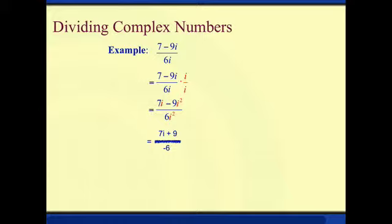However, the problem is the numerator is not in its standard form. So we need to switch places. So for this particular complex number, our final answer will be 9 plus 7i all over negative 6.